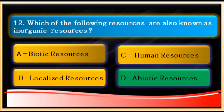Question number twelve: which of the following resources are also known as inorganic resources? Inorganic means non-living, which means abiotic resources. The answer is D: abiotic resources. Biotic resources are living and organic — they are not inorganic. Localized resources are found at certain places, and human resources are also incorrect here.